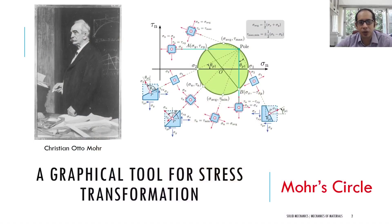The stress-strain transformation equations you have seen until now are, frankly, a little cumbersome — you have to remember several different equations, remember the signs, and so on. There exists another method to do the stress-strain transformation which makes your life incredibly easy, and it relies on a graphical technique discovered by the German scientist Christian Otto Mohr, a famous civil engineer.